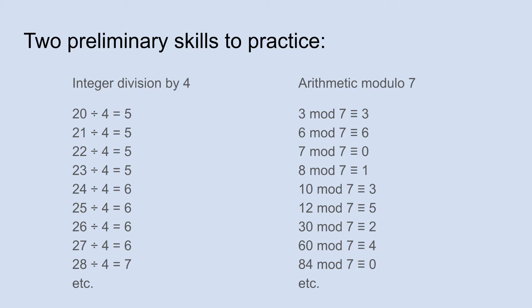The other skill is modular arithmetic. Modulo 7 just means we're going to divide by 7, and it's kind of the opposite of integer division. Instead of ignoring the remainder, we're only going to pay attention to the remainder. So 3 mod 7 is asking: what is the remainder when you divide 3 by 7? The quotient is 0 and the remainder is 3. 6 mod 7 is just 6. 7 mod 7 is 0, because there is 0 remainder when you divide 7 by itself.